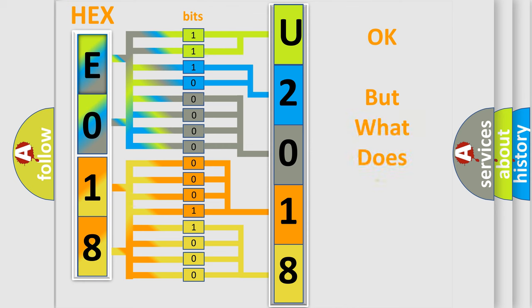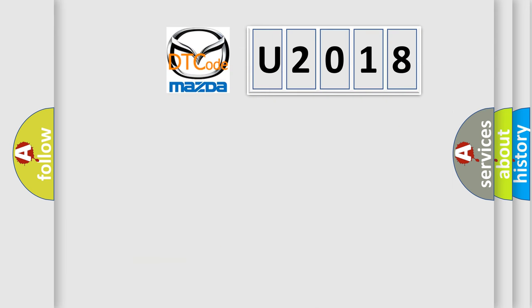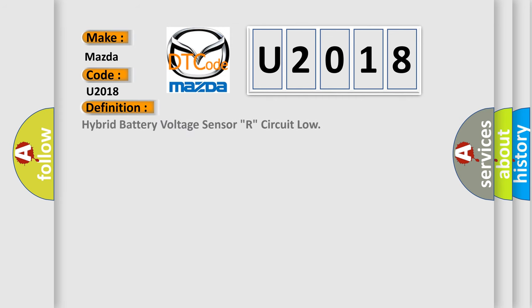We now know in what way the diagnostic tool translates the received information into a more comprehensible format. The number itself does not make sense to us if we cannot assign information about what it actually expresses. So, what does the diagnostic trouble code U2018 interpret specifically for Mazda car manufacturers?